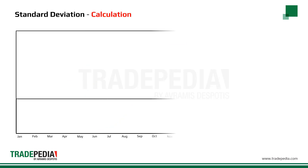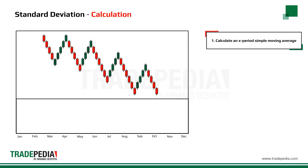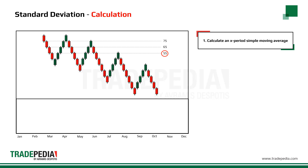To calculate the standard deviation, first calculate an x-period simple moving average. The default period used is 21. However, in our example, we will use a 3-period moving average. Averaging 3 closing prices of 75, 65, and 55 gives us an average of 65.